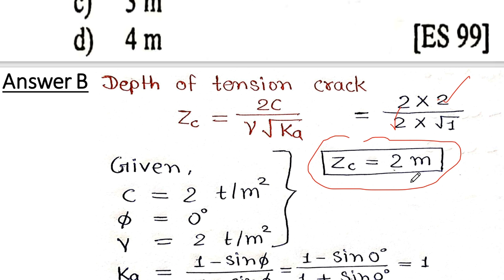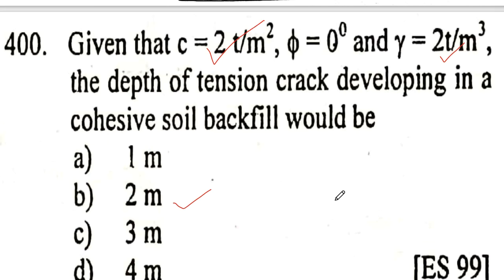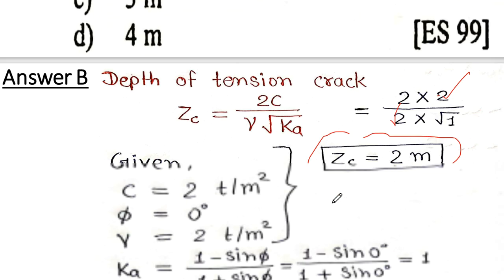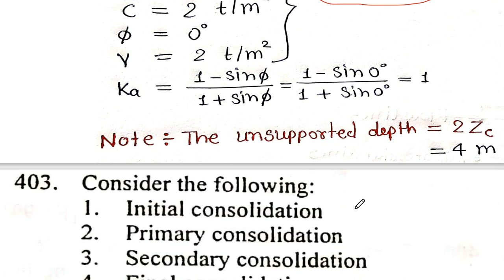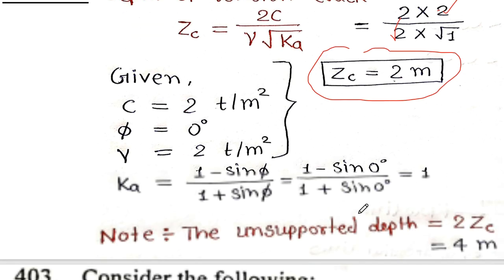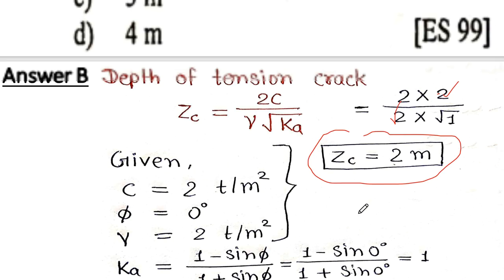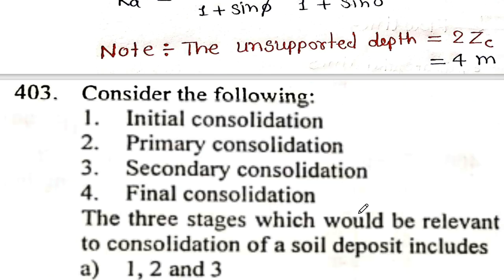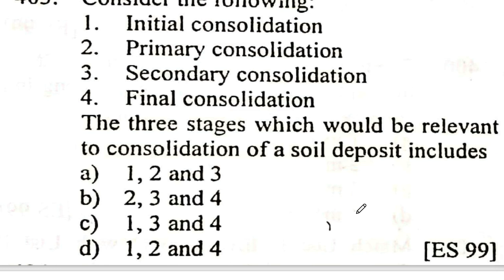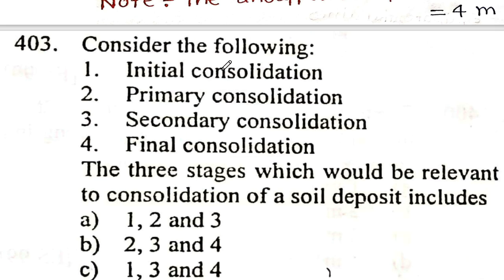The unsupported depth is 2 times the depth of tension crack, so it is 2 × 2 = 4 meters. Therefore, option D (4 meters) is correct.